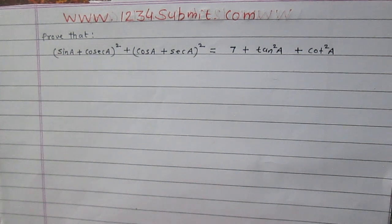Prove that (sin a plus cosec a) whole square plus (cos a plus sec a) whole square is equal to 7 plus tan square a plus cot square a.